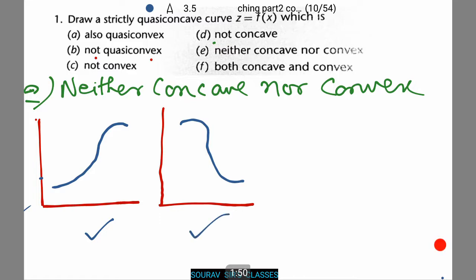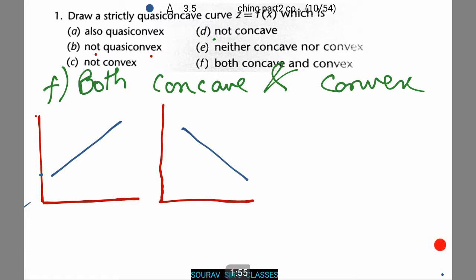Now we'll do for both concave and convex. In the last case for both concave and convex, notice that a straight line represents both a concave and convex. And hence whenever this question is given, you need to draw both an upward sloping and a downward sloping.